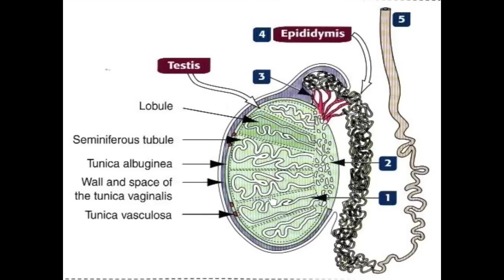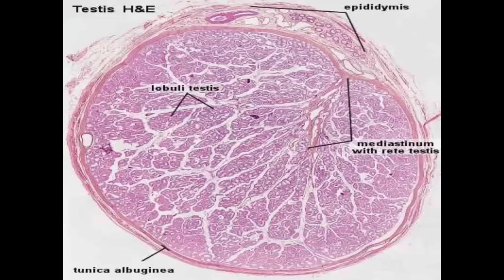The tunica vasculosa also covers the trabeculae. After that, we have the seminiferous tubules, and these will put their secretion of cells into the rete testis — a network at the mediastinum testis or posterior part of the testis. From this network, the sperms will pass through the vasa efferentia, then the epididymis (epi means above, didymis means testis), and then enter the body cavity through the vas deferens.